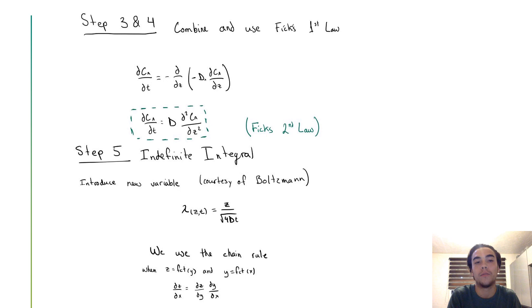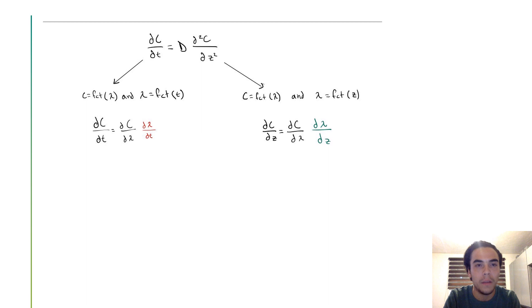We use the chain rule when c is a function of y and y is a function of x. This is a little example of how it would be. And this would be our particular case in our system.